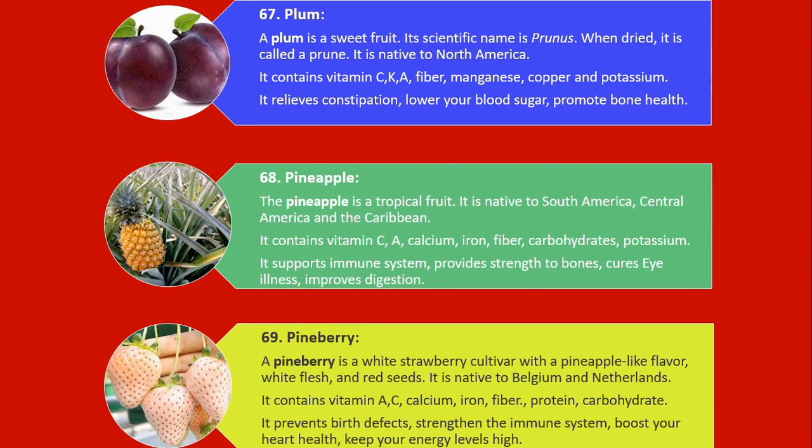Number 67. Plum. A plum is a sweet fruit. Its scientific name is Prunus. When dried, it is called a prune. It is native to North America. It contains vitamin C, K, A, fiber, manganese, copper and potassium. It relieves constipation, lowers blood sugar, and promotes bone health.